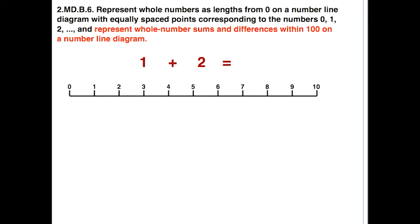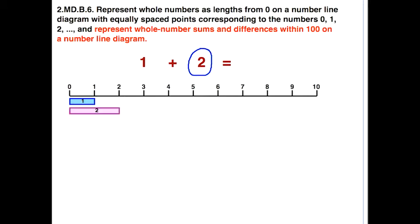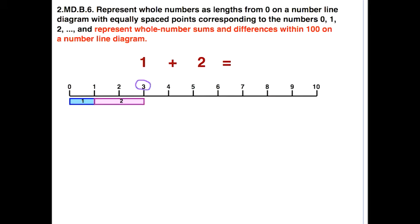Let's try again with one plus two using strips. The key idea is that we start at zero. We use a strip for a distance of one. Then we're going to add two, laying the strips end-to-end with no gaps or overlaps. We find the strip that's a length of two and lay it next to the one with no gap or overlap. This way we can see that we are at three — that is our solution.